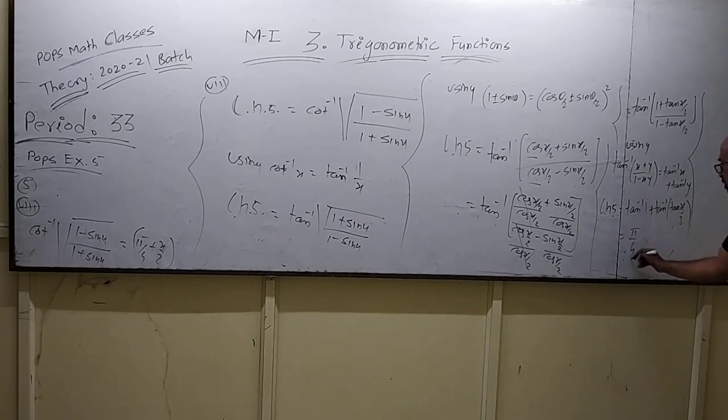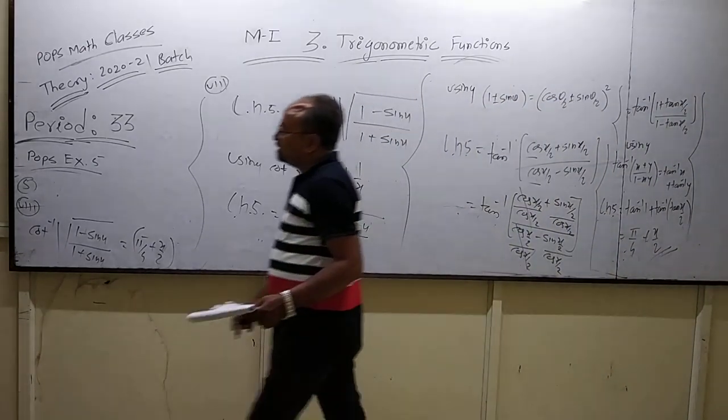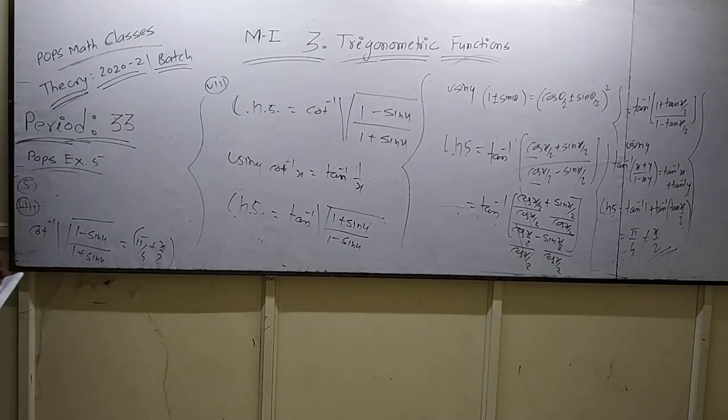Here you have pi by 4 plus tan xy2. Here, LHS equals RHS. You have LHS equals RHS.